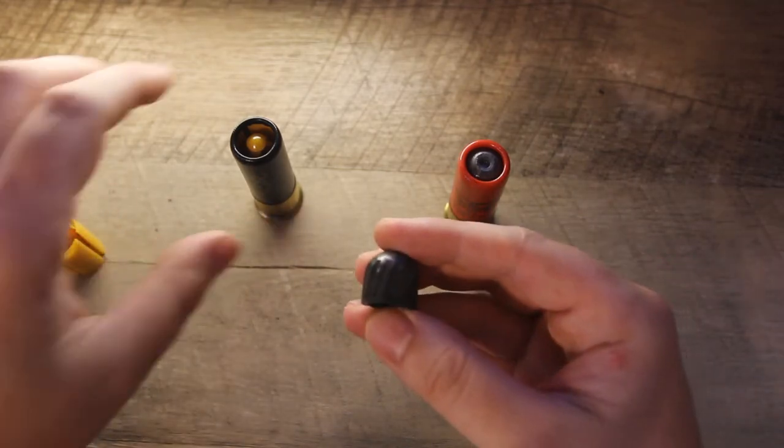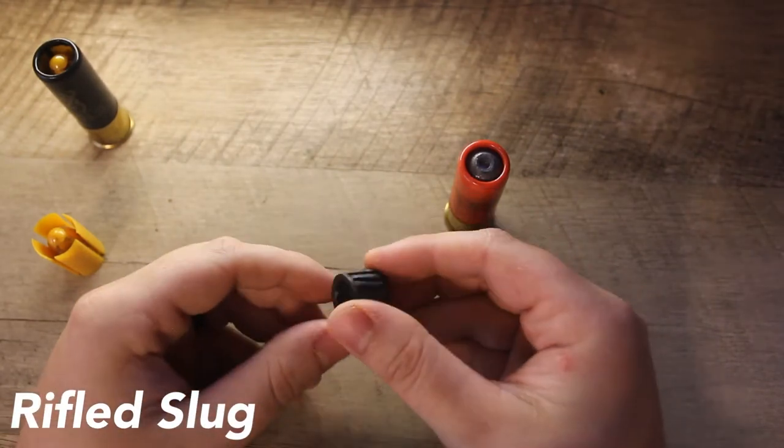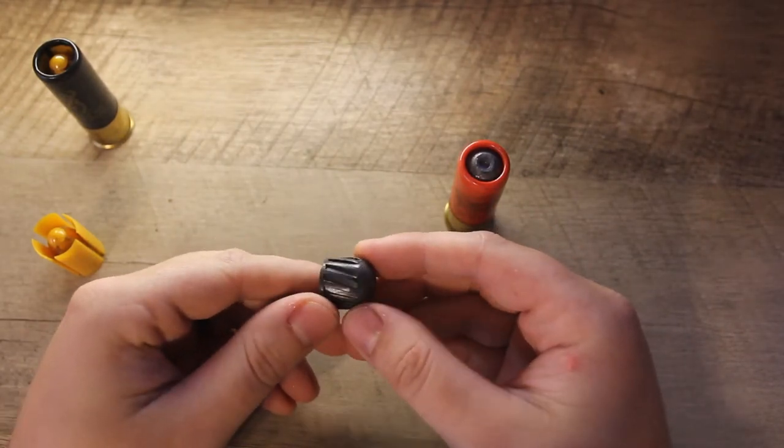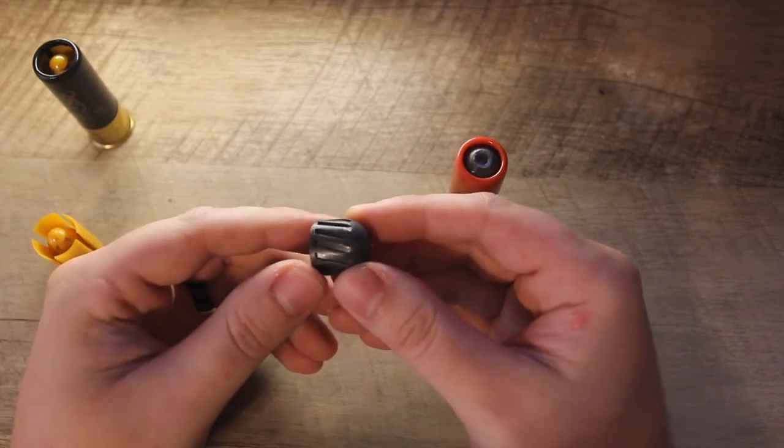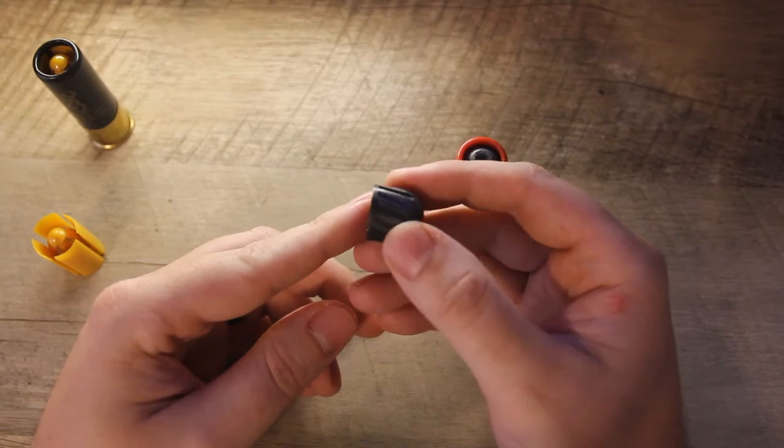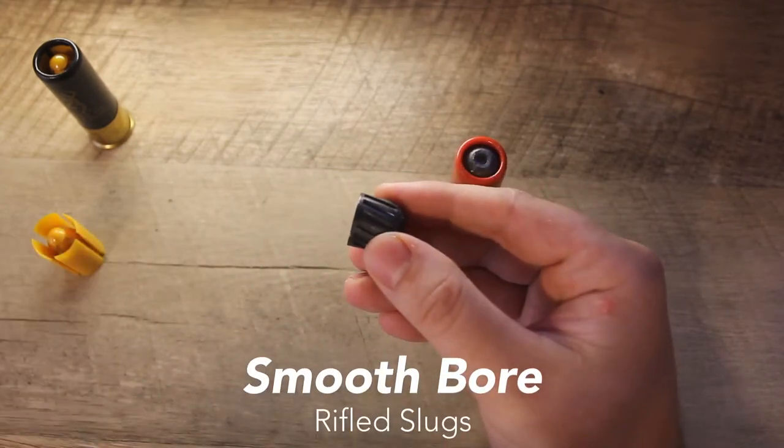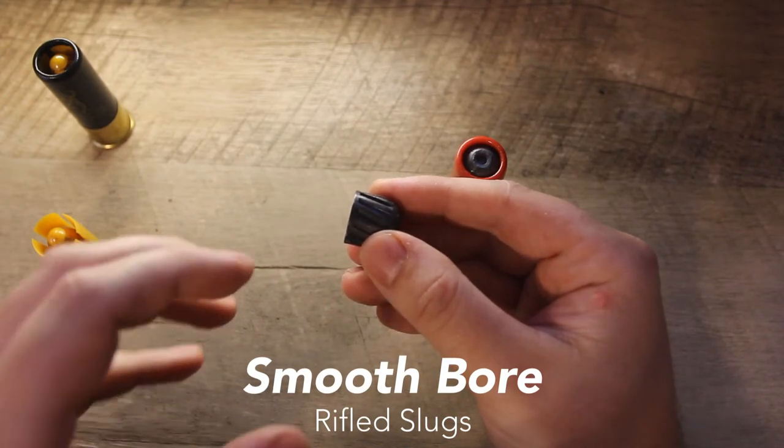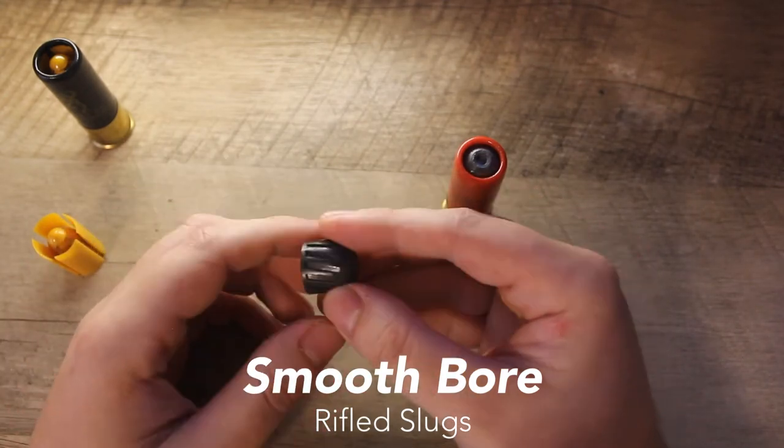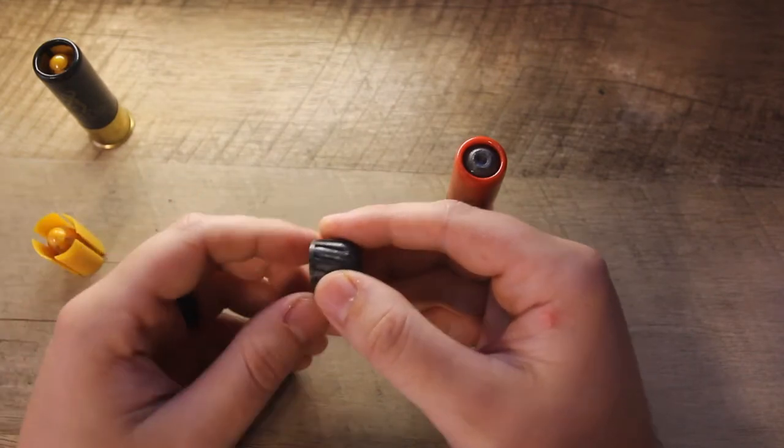So first we're going to discuss this rifled slug. These are what most people are familiar with; they've been on the market for a long time and you can see it's essentially this big hunk of lead that's got these angled grooves built into the wall of these slugs. Now these slugs are designed to be used with a smooth bore shotgun, so if your shotgun barrel has internal rifling, do not use this type of slug.